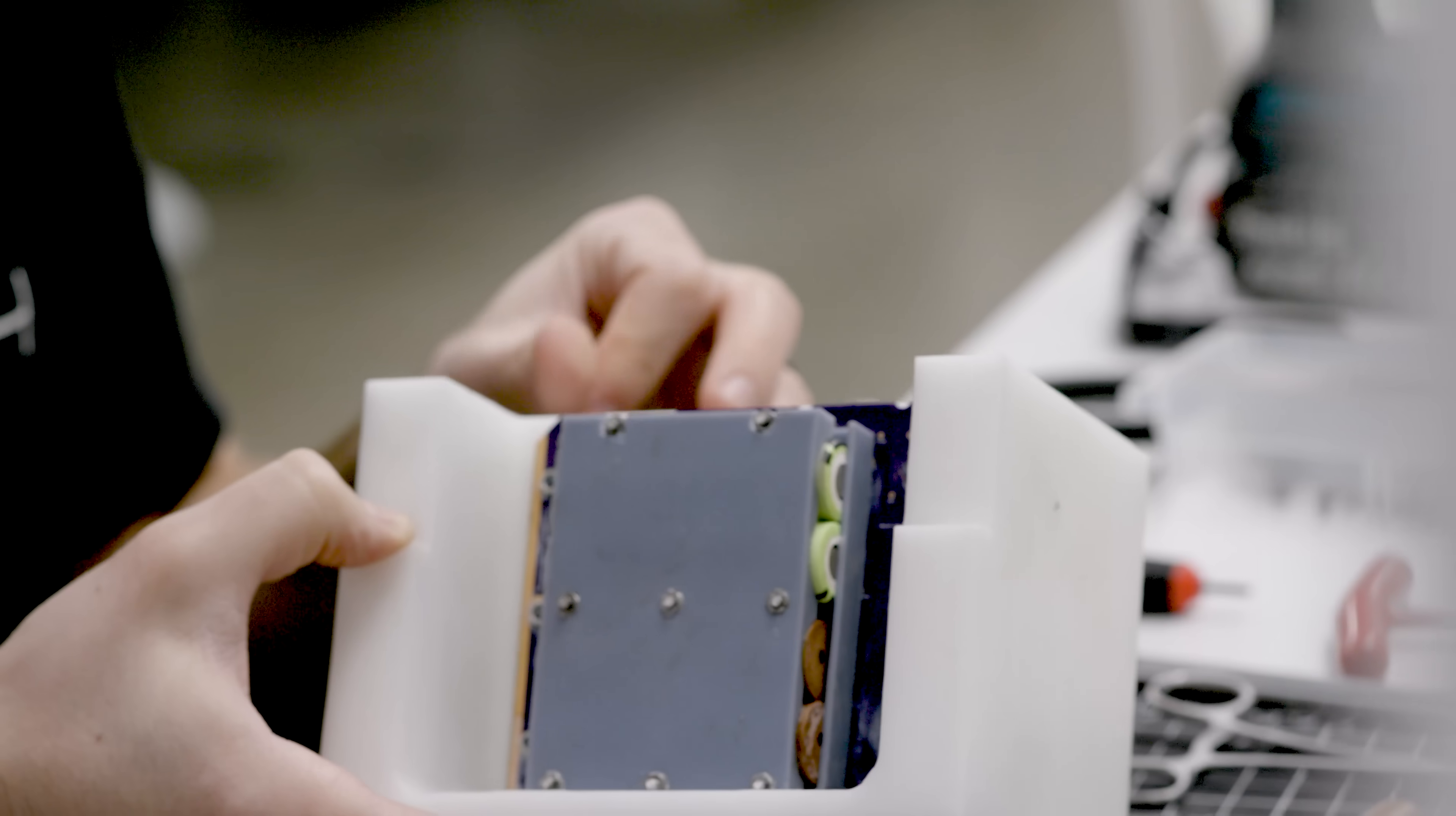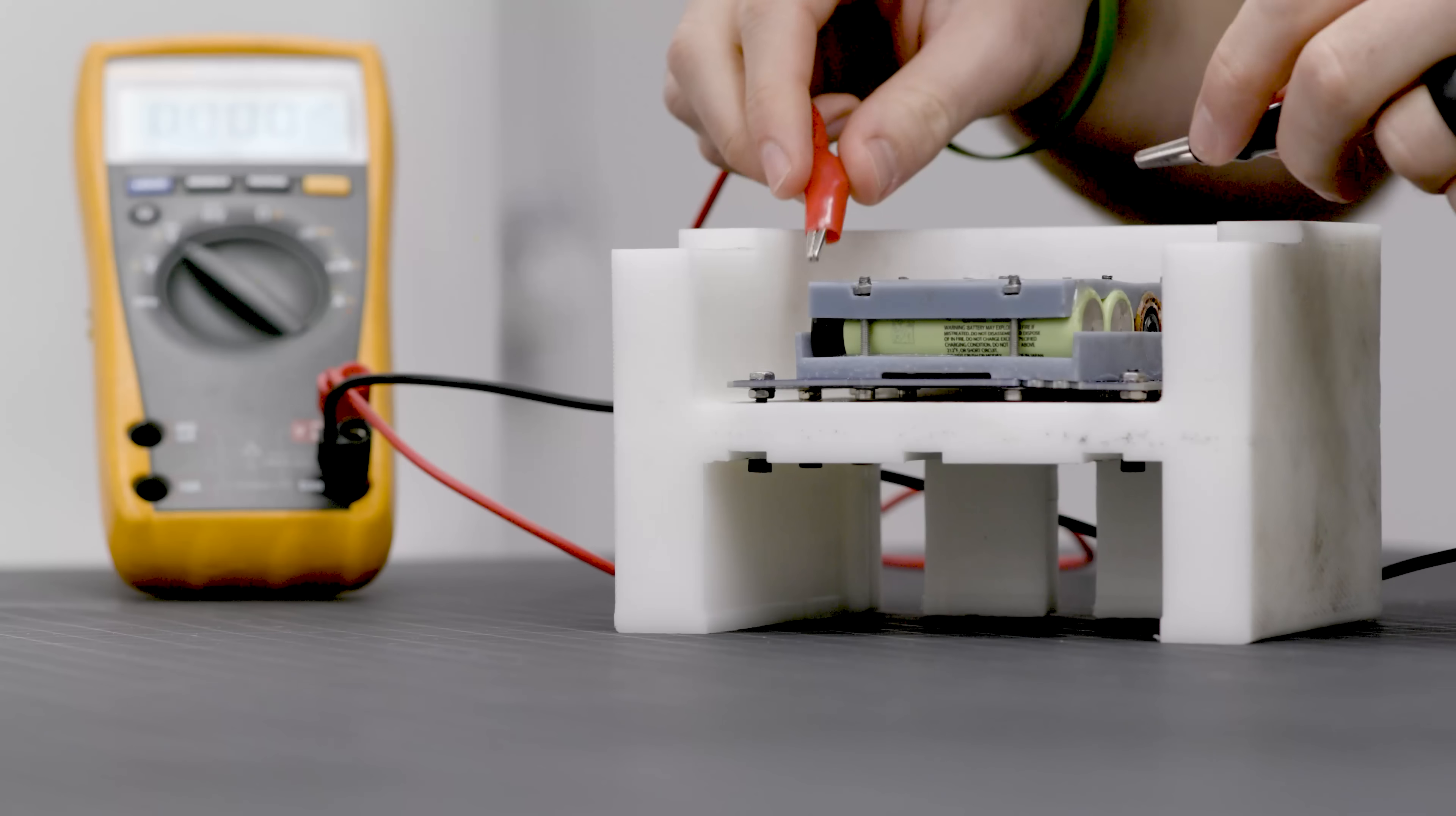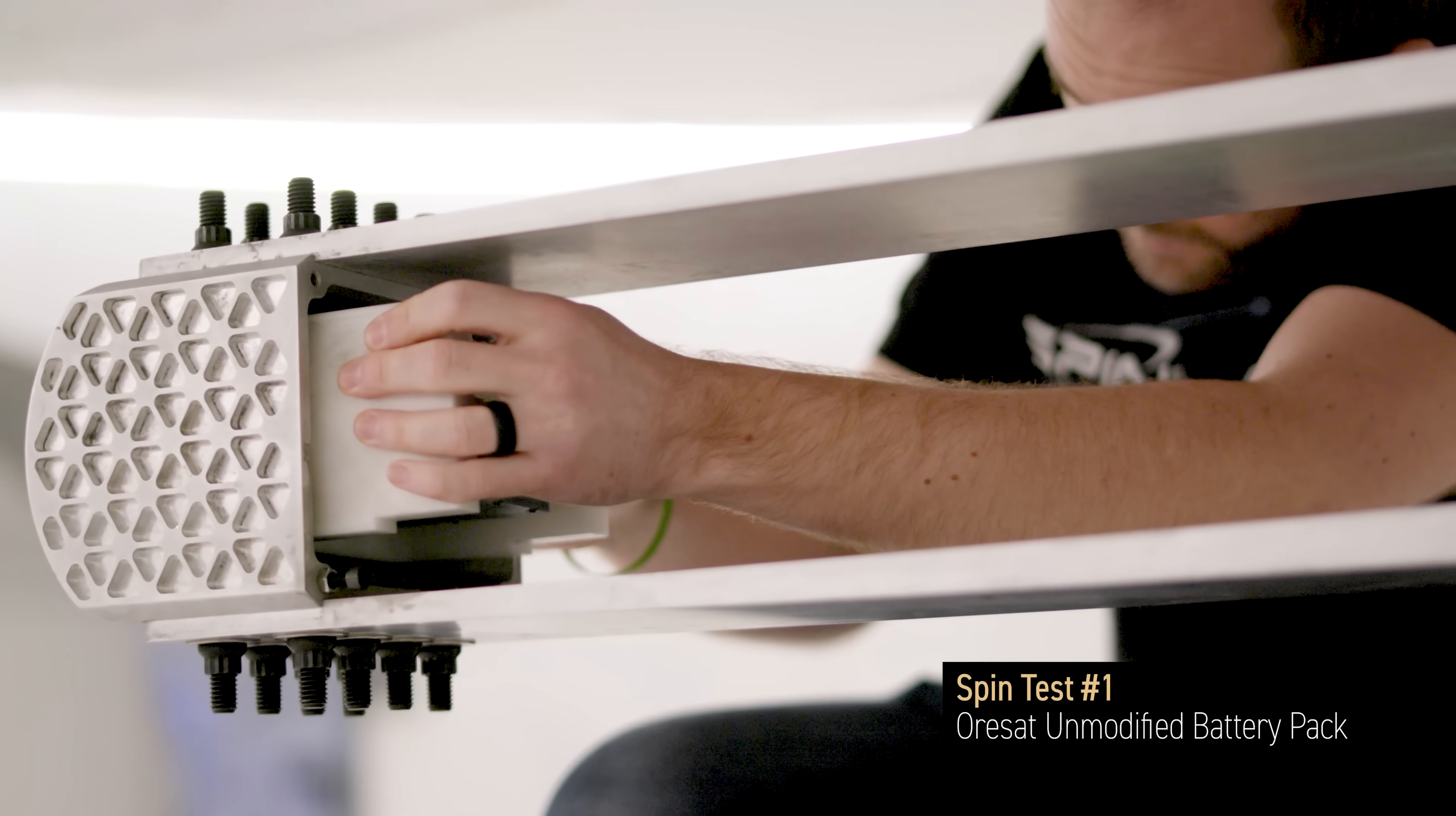ORSAT has a battery pack that they designed that is open source. So we were able to take that design and analyze it ourselves. Their battery pack is standard battery pack construction in the satellite industry. What we wanted to see about that battery pack, though, is can it survive 10,000 Gs by itself with no modifications whatsoever?